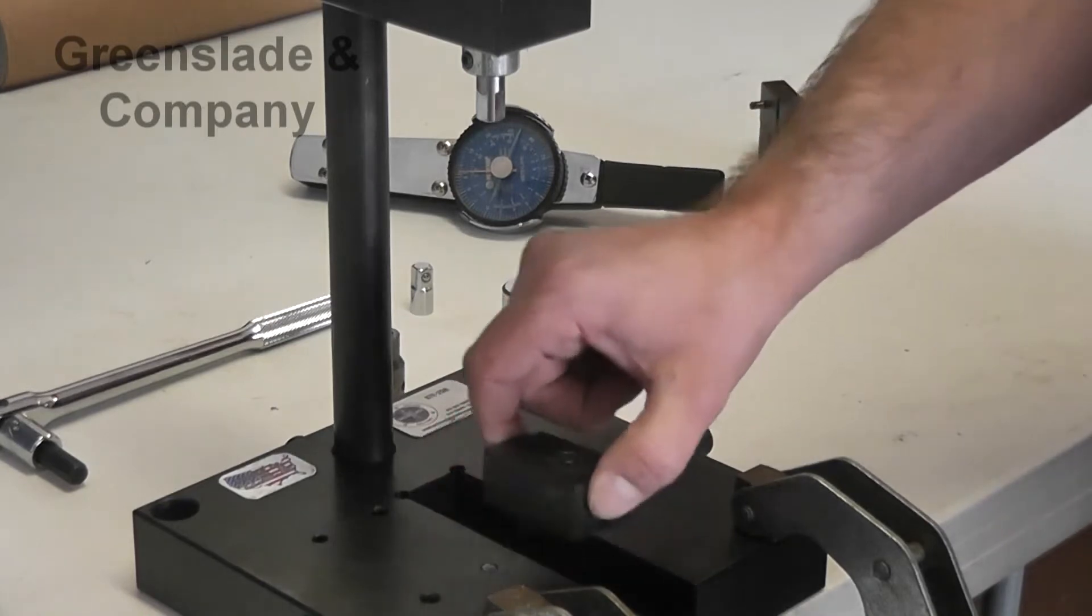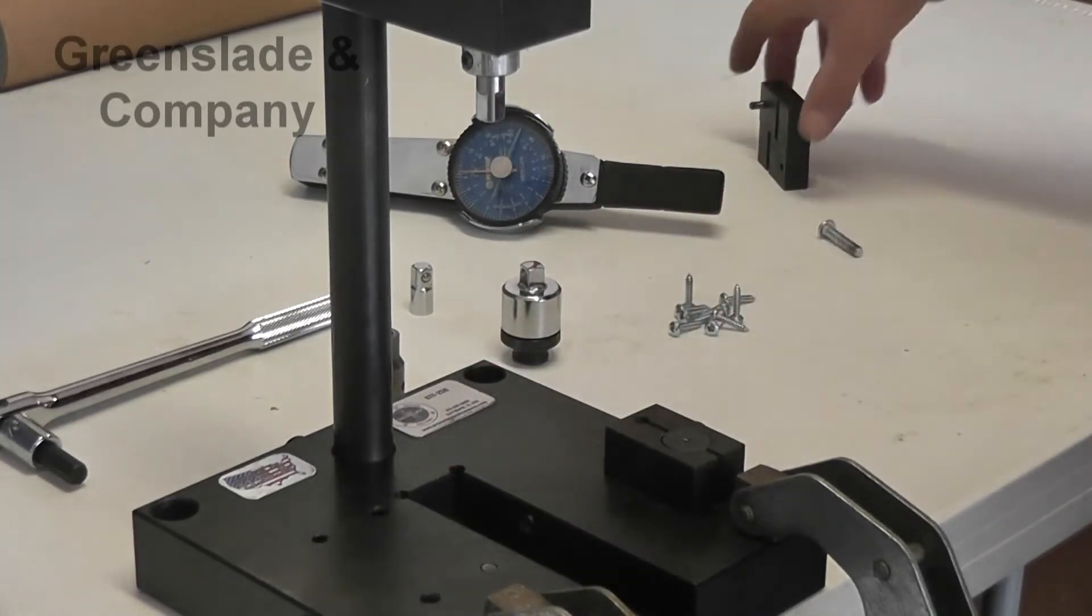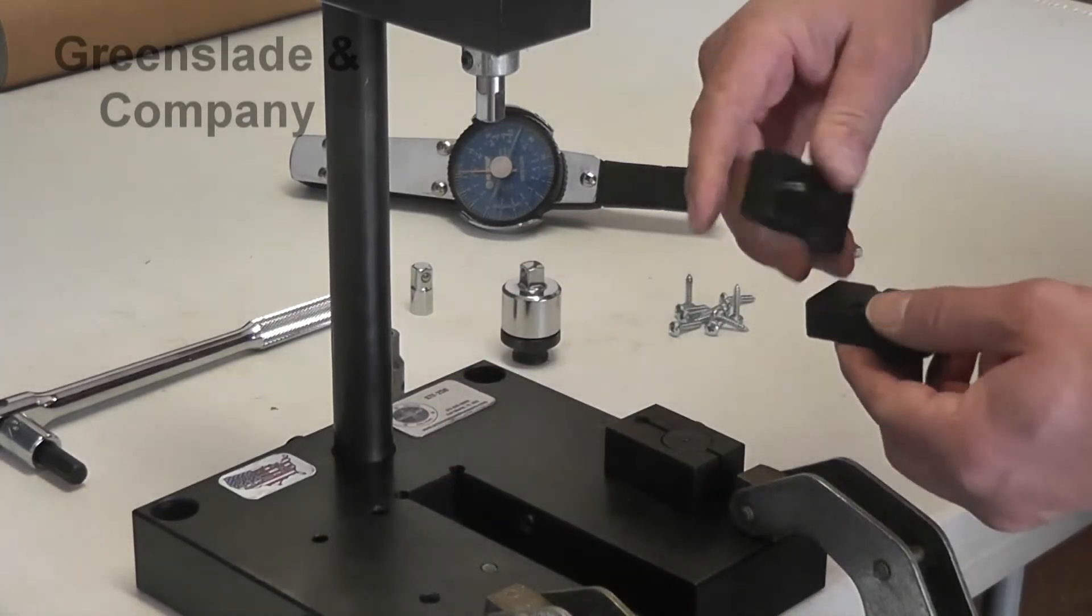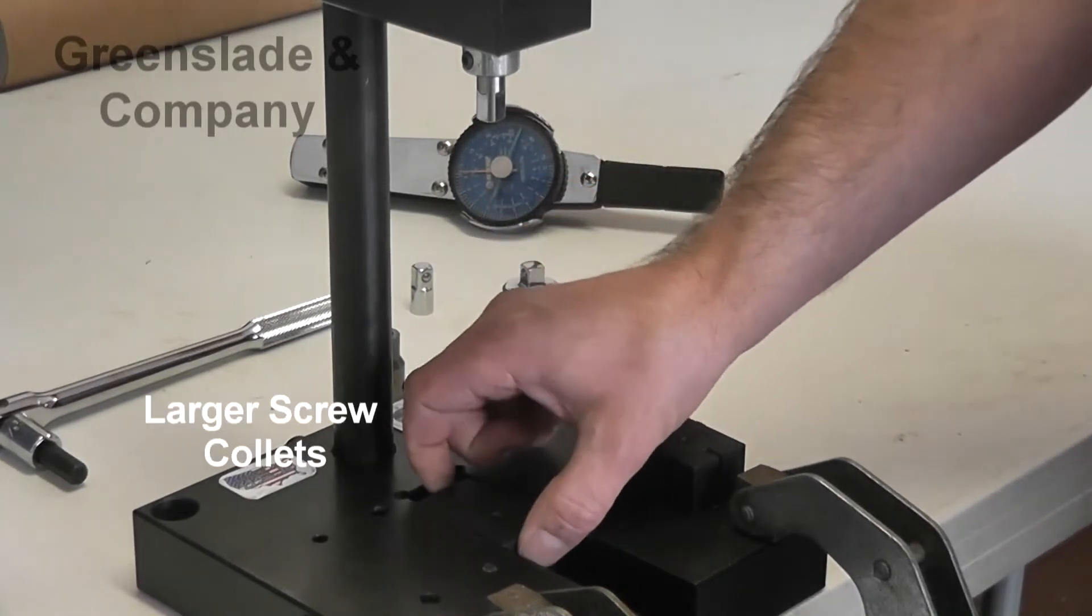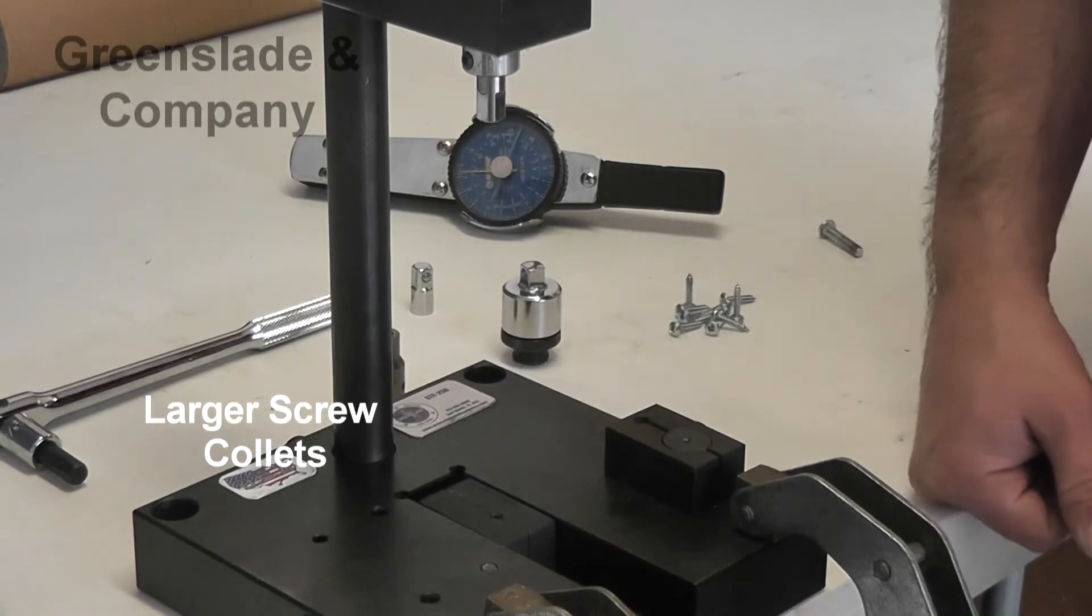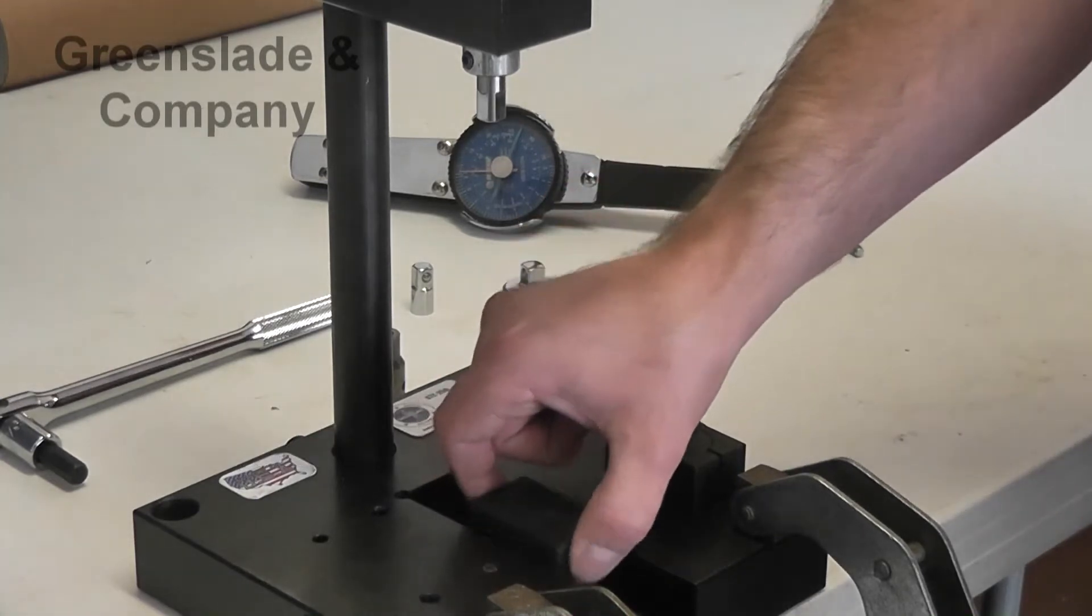For larger screws, we have larger screw collets. That would be like quarter inch and above or an M6 and above for the larger collets.